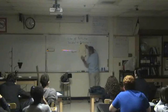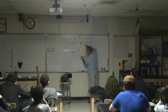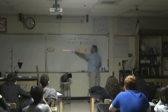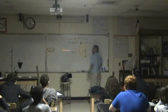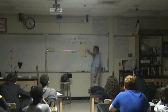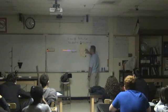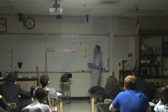The light comes along and strikes the circle, striking the normal at zero degrees. If the mirror is aligned properly, the light bouncing off should also be along the normal. I'm going to adjust everything so now it's all lined up.